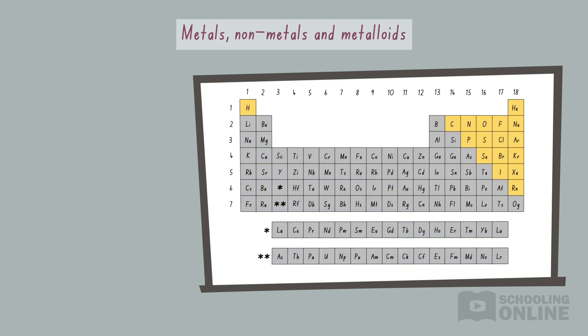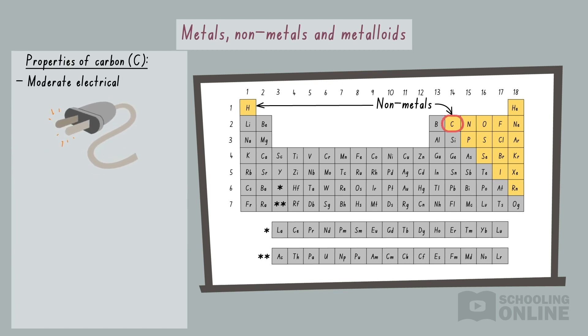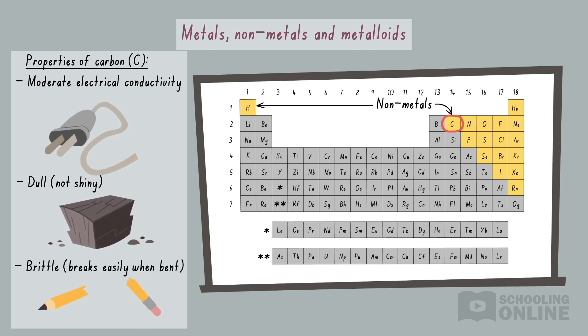On the other side of the periodic table are nonmetals. Although carbon is a moderate conductor of electricity, most nonmetals cannot conduct electricity. Carbon has a very dull appearance and is brittle, which means that it breaks when you try to bend it. As we can see, nonmetals are almost the complete opposite of metals.